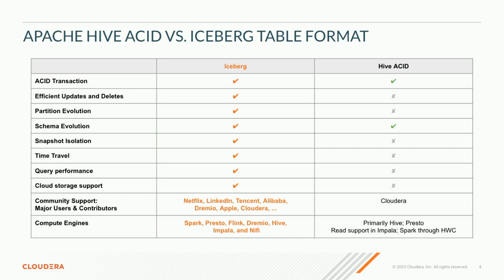With this new mechanism, we get much better query performance and cloud storage support, and — since we're here at Community Overcode — community support. Hive ACID was built by Cloudera, whereas Iceberg is contributed to by Cloudera as well as Apple, Dremio, Alibaba, Tencent, LinkedIn, Netflix, and many more. That creates a greater degree of opportunity for innovation, broader community support, and broader portability. If everyone's working with Iceberg, then Iceberg works everywhere.